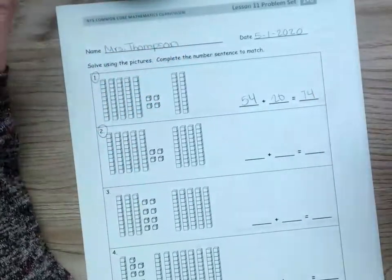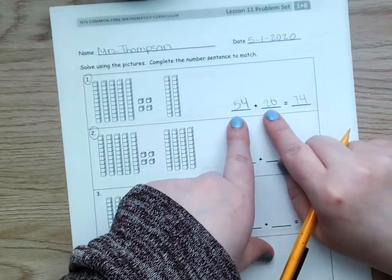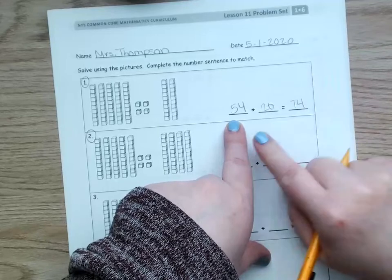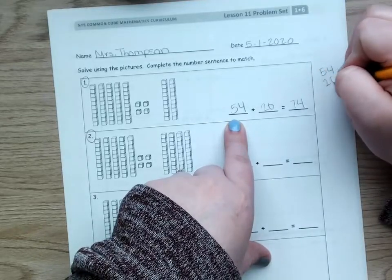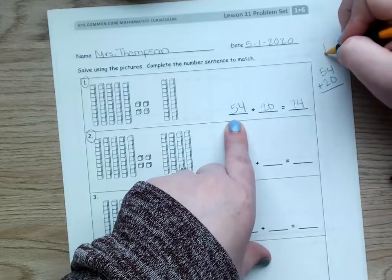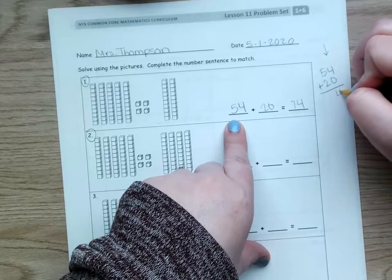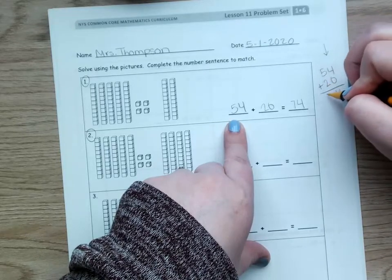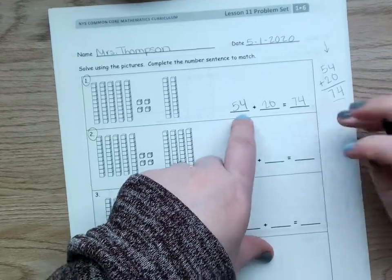Okay? Another way you could solve this is once you've found the numbers in your number sentence, you can line them up on the side. So, I'd have 54 and 20. Line them up like this. Remember, we always start on the one side. So, 4 plus 0 is 4. 5 plus 2 is 7. I got 74.